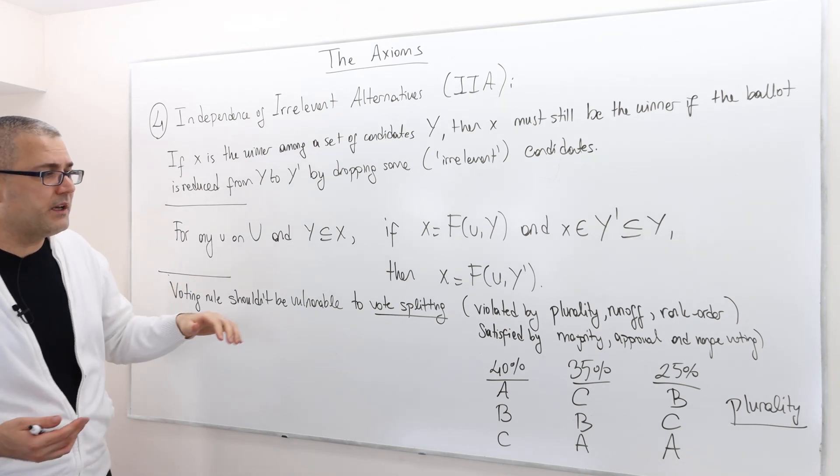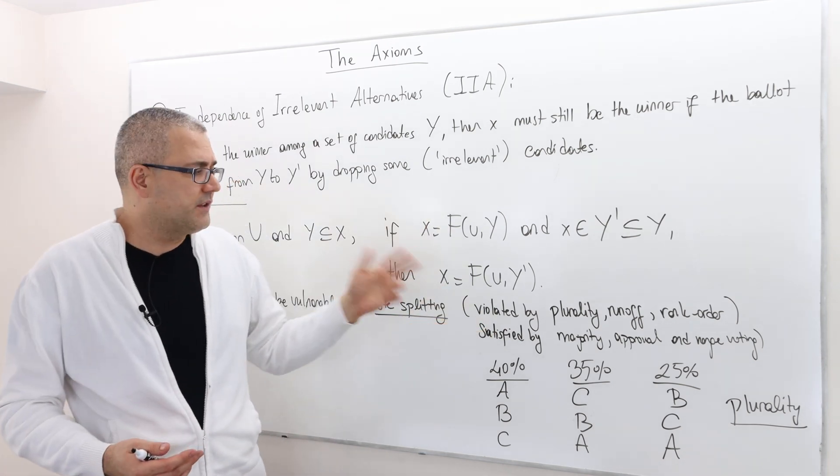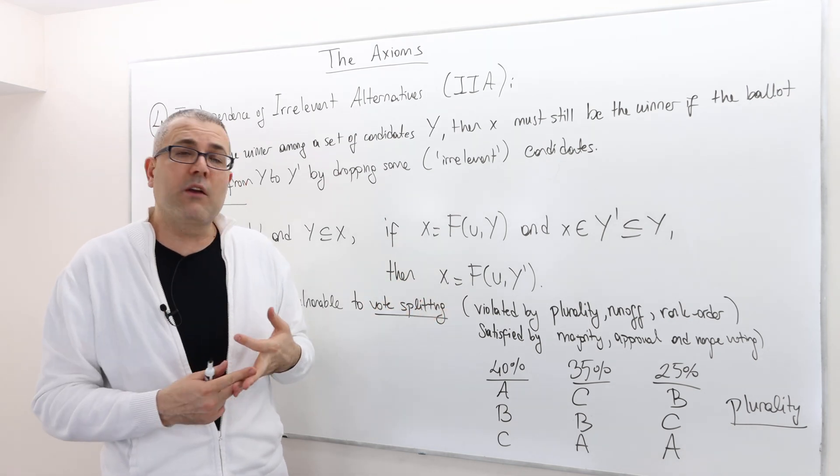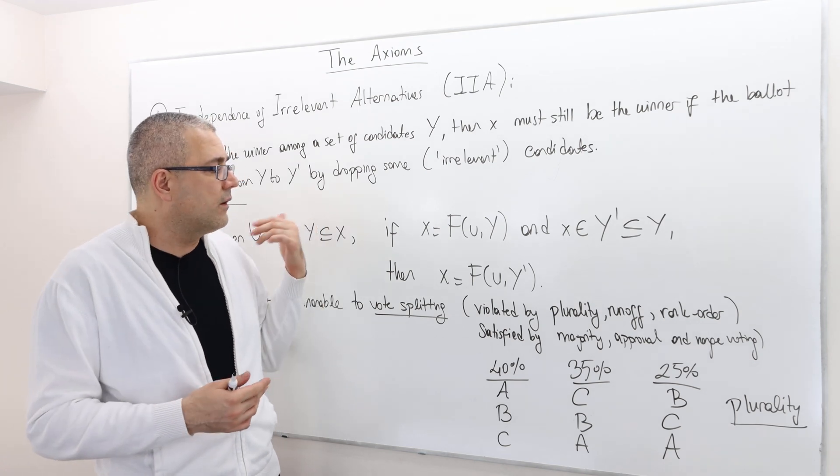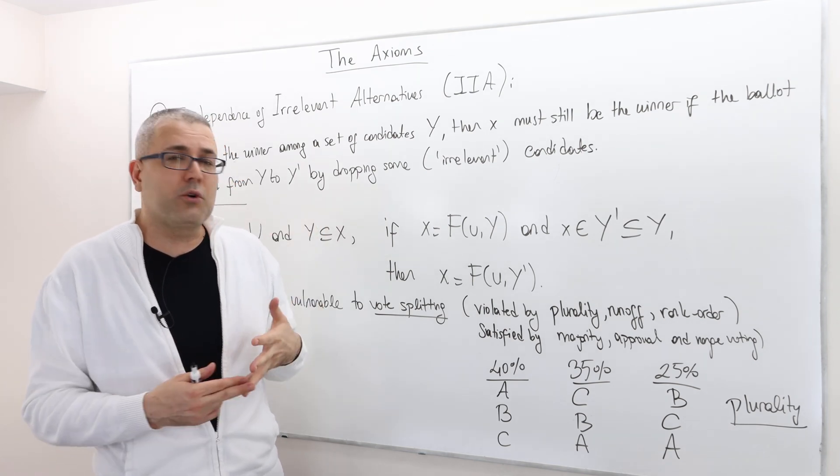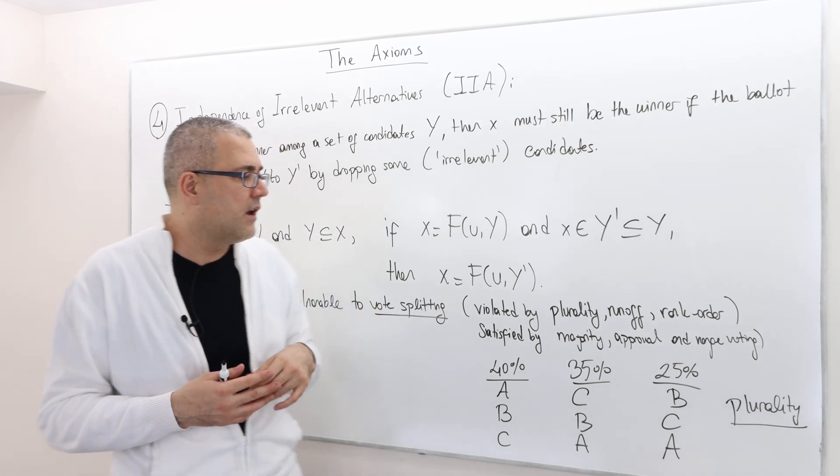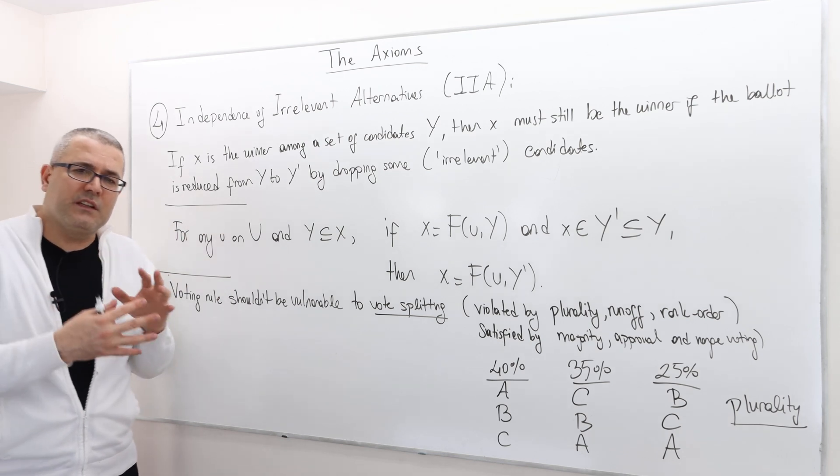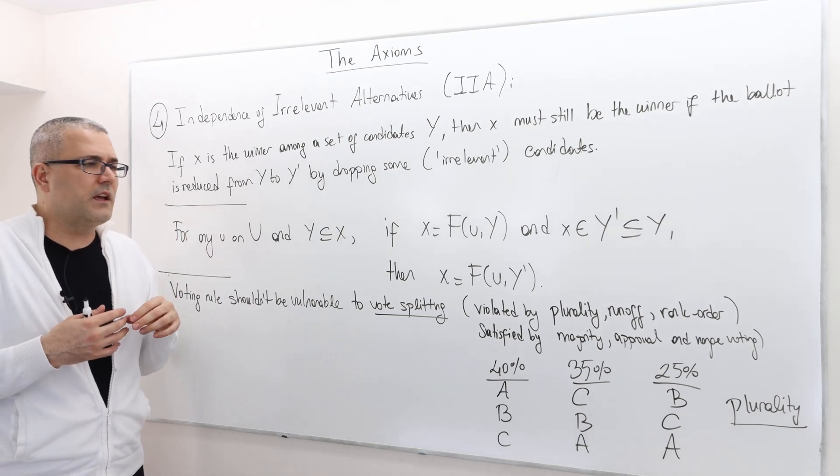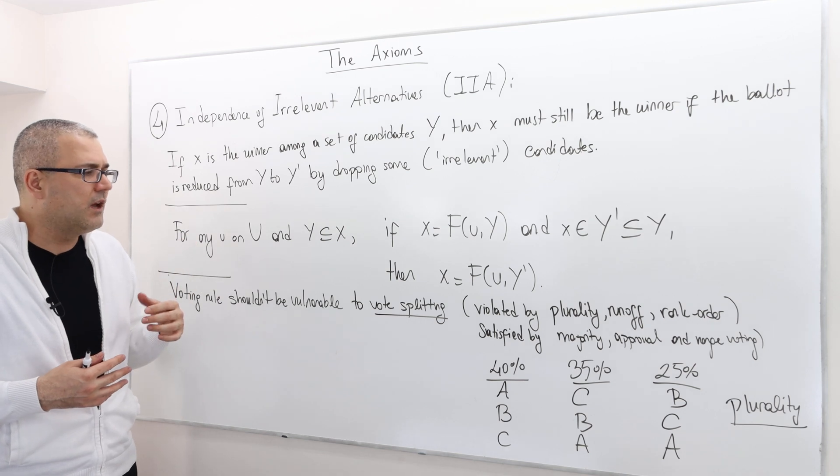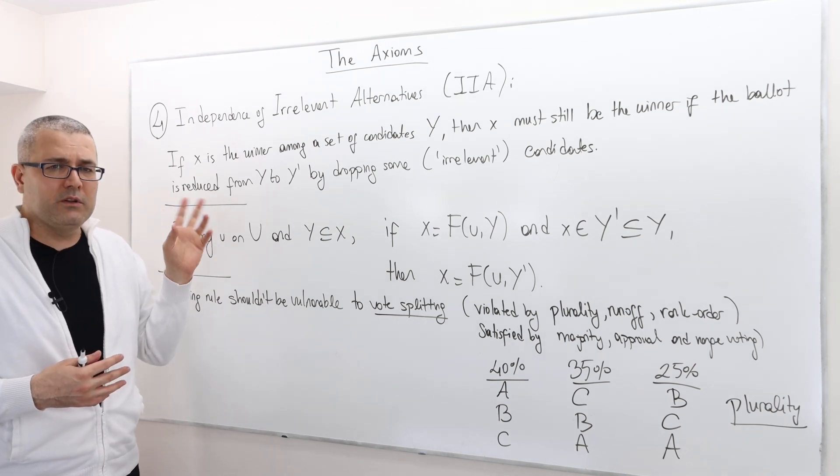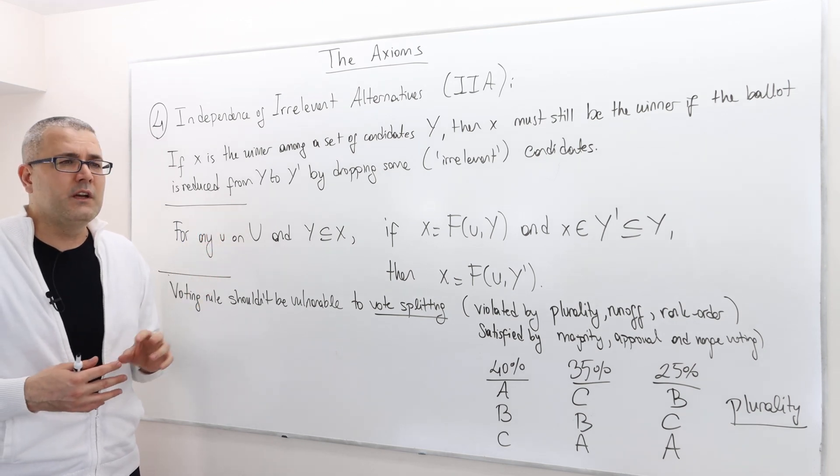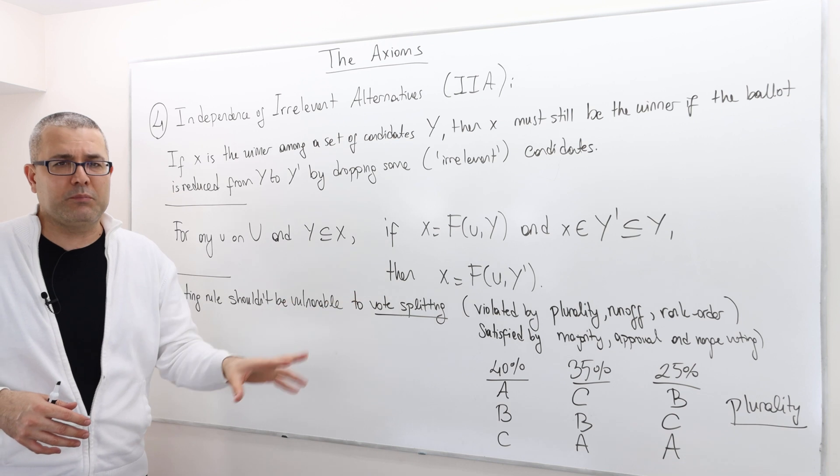Why is that so? Because this assumption, this axiom is, for example, violated by plurality, runoff voting, rank order voting, or the Borda count. It is, however, satisfied by majority approval voting and range voting. There is nevertheless a reasonable and sound defense behind this axiom, because if the voting rule violates this axiom, we actually can observe a situation which is called vote splitting.